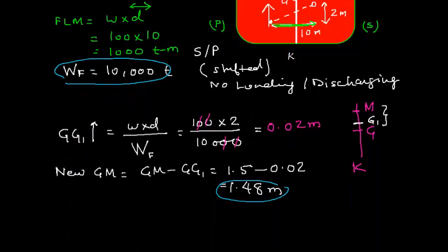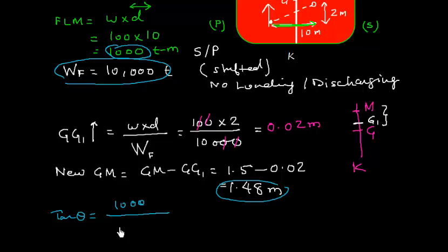Let me just put these values. I get tan theta, final list moment which is, no, this is 1,000. List moment is 1,000 divided by 10,000 into 1.48. I just need to cancel this.